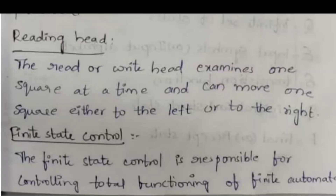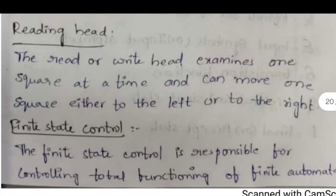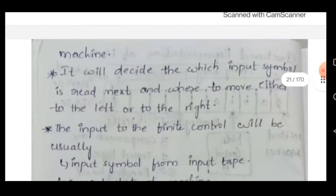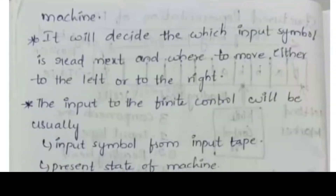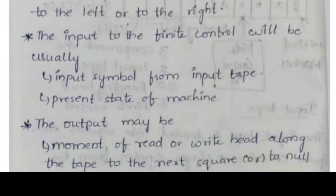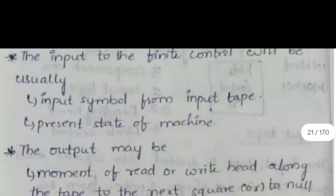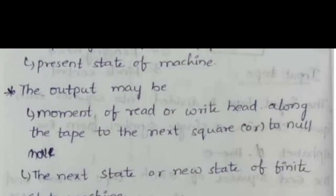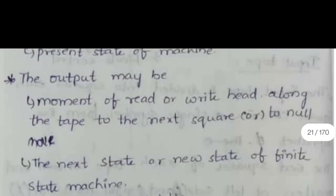The finite state control is responsible for controlling the total functioning of the finite automata machine. It decides which input symbol is read next and where to move — either to the left or to the right. The input to the finite control is usually the input symbol from the input tape and the present state of the machine. The output may be the movement of the read or write head along the tape to the next square, or a null move, and the next state or new state of the finite state machine.